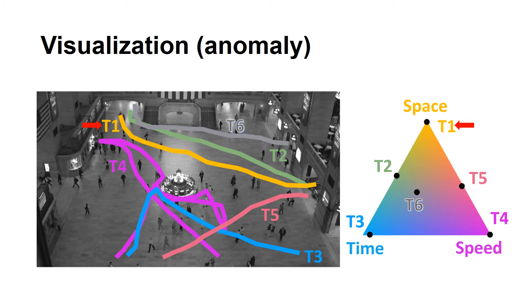Another example is T2. Its position in the triangle indicates that it has relatively normal space and time, but its speed is abnormal. Overall, our model provides a rich visualization for anomaly analysis.